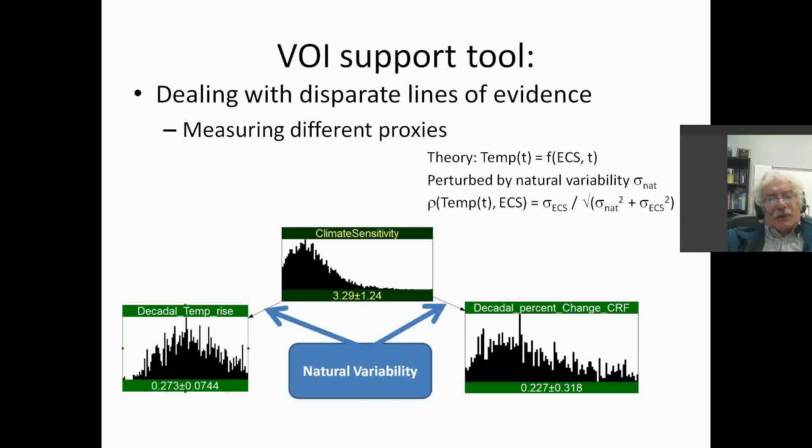However, if we put thermometers around on the surface of the Earth, those measurements will be perturbed by natural variability in the Earth's climate system. But this variability can be quantified and taken into account as expressed in this term sigma nat.